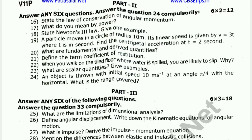24 compulsory. Problem: An object is thrown with initial speed 10 meters per second at an angle of π/4 to the horizontal. What is the range covered?